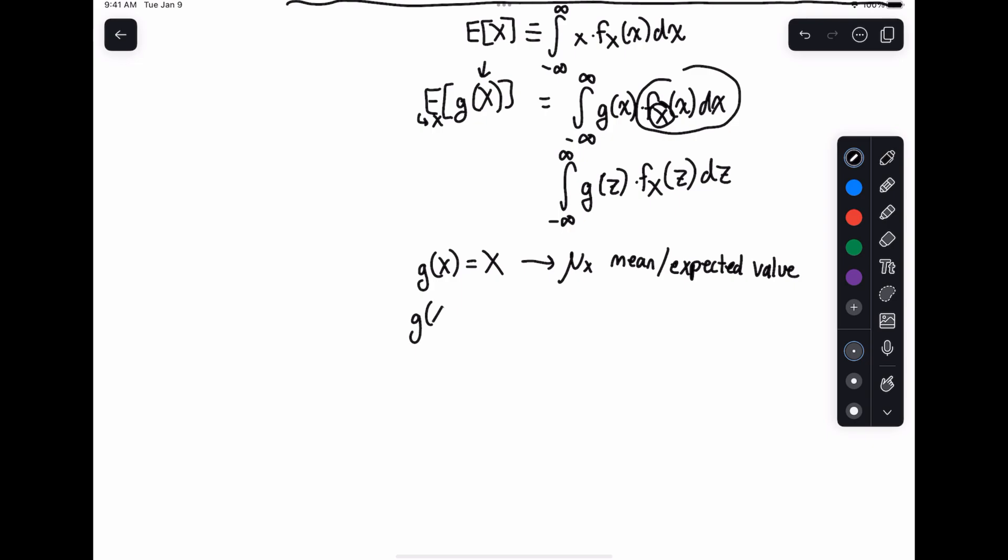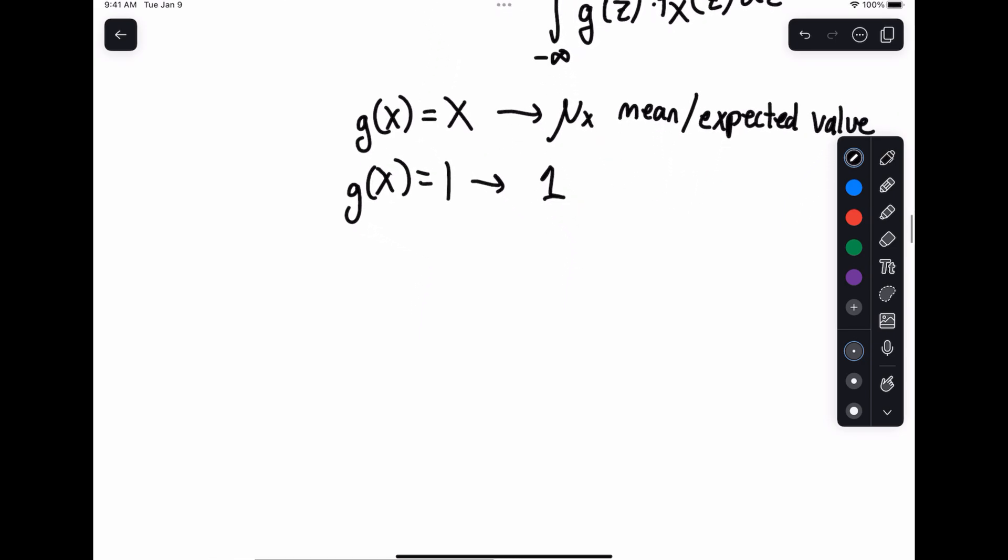If g of x is equal to one, what do you get? Well, you simply get one, because what you're doing is integrating over your probability density function. There's no value there, you're just integrating over the PDF. And what you get, of course, is one because you're integrating a valid PDF from minus infinity to infinity. So the expectation there is one.